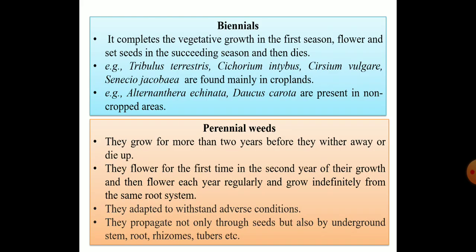Biennials, also referred to as biseasonals, complete their vegetative growth in the first season and flower and set seeds in the succeeding season, then die. For example, in cropland areas we have Tribulus terrestris, Cichorium intybus, Cirsium vulgare, and Senecio jacobaea. In non-cropped areas we have Alternanthera echinata and Daucus carota. This is a topic frequently asked in competitive exams, so remember all the biennial weed examples.